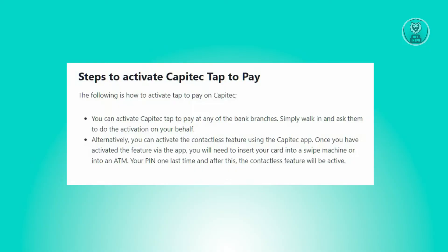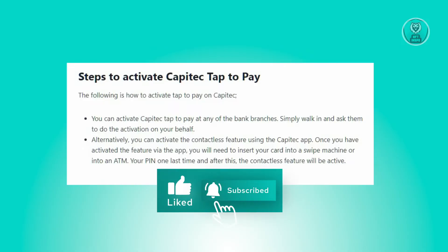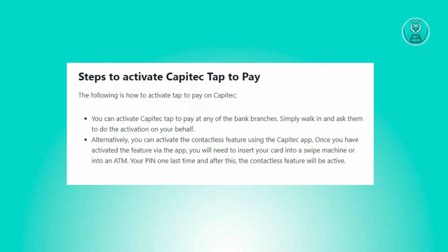From then you will be able to use tap to pay. To finally use your tap to pay features, you'll have to go to any ATM and insert or use your card and enter your PIN one last time, and the contactless feature will now be activated and ready to use.